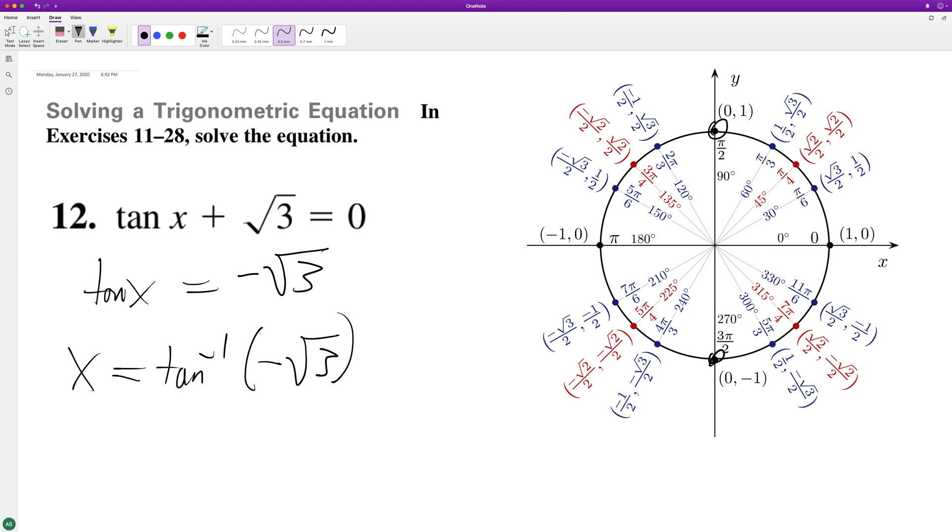So it's equal, basically y over x, so negative root 3 over 1. So in that instance it looks like it's only going to be at...